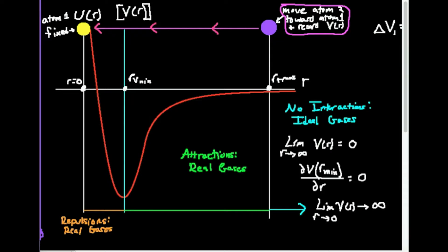One thing to realize is that this horizontal line, where it crosses the vertical axis, is essentially where the potential energy is equal to zero — there's no favorability, whether repulsions or attractions; they're balanced at that point. If you think about the purple atom being at an infinite distance away from the yellow atom, based on electrostatics there's going to be negligible or no interactions between the two atoms, because they're an infinite distance away from each other. That reality is indicated by this first limit.